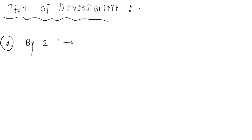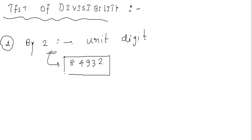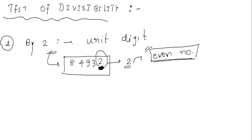To understand that a given number is divisible by 2 or not, you have to check that particular given number's unit digit. For example, if I take the number 84932, we have to check the unit place of this number. The unit digit of this number is 2. Whenever we find an even number at the unit digit of any large number, we can clearly say that that particular number is divisible by 2.